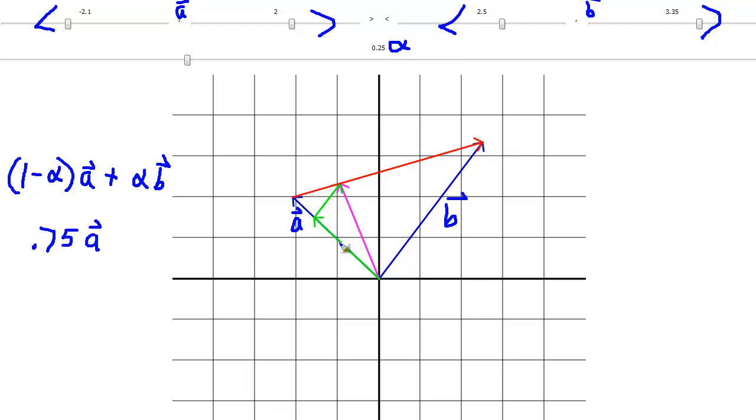And vector A is this blue vector behind the green vector. So 0.75 times vector A. Here's vector A, 0.75 up the way or three quarters up the way up vector A, which is represented by this green vector hiding back here. So this is 0.75.